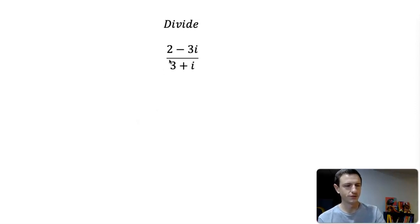So here we are looking to divide 2 minus 3i over 3 plus i. Now the issue with this problem is that we have this appearance of i—it's a complex number.